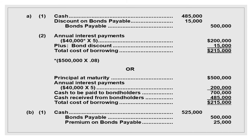Part (a), number one — issuing the bond at discount: Cash debit $485,000; Discount on Bonds Payable debit $15,000; Bonds Payable credit $500,000.